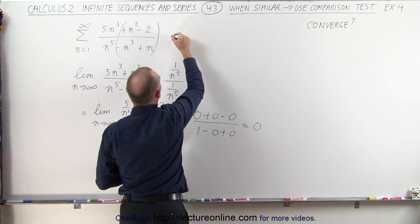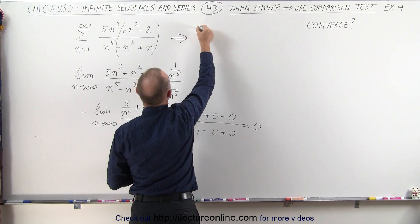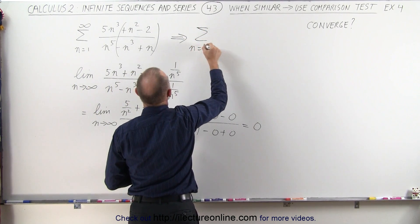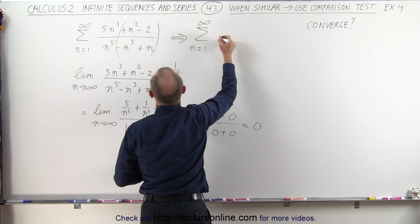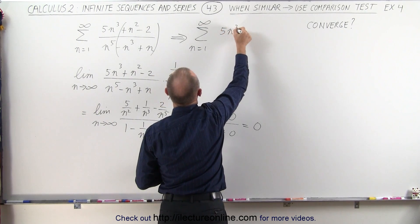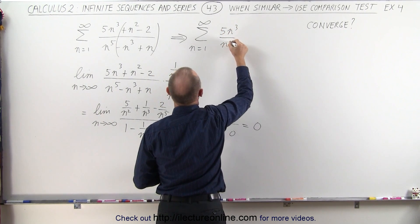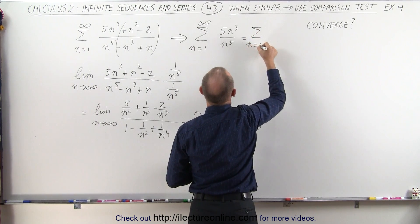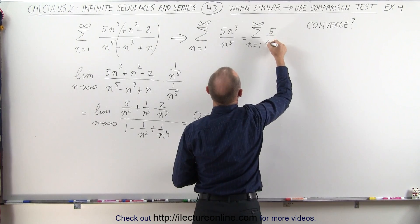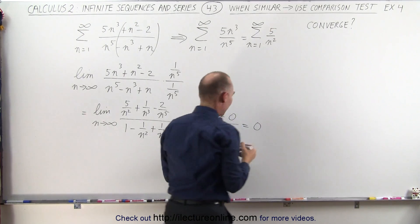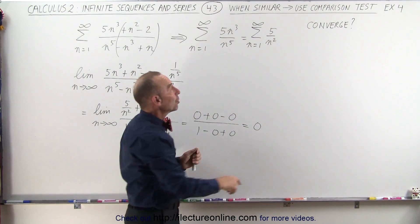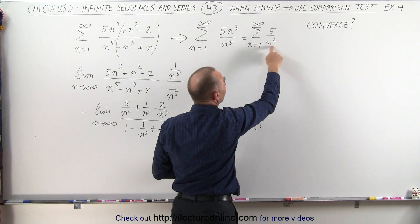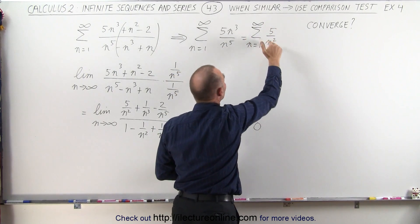so you can say that if we have the infinite sum, if we compare that to the infinite sum from n equals 1 to infinity of 5n cubed, divided by n to the fifth, which is equal to the sum from n equals 1 to infinity of 5 divided by n squared, this then becomes a p series, and the exponent is larger than 1, n squared, therefore we know that this converges.